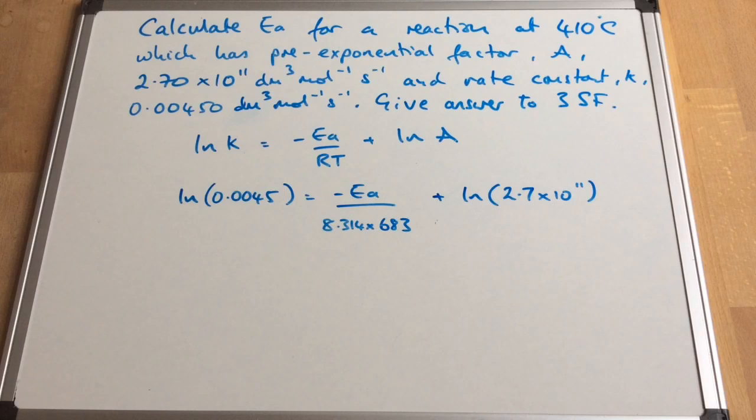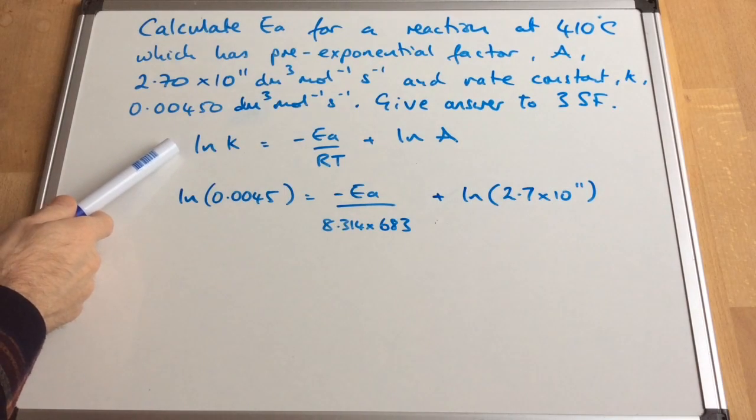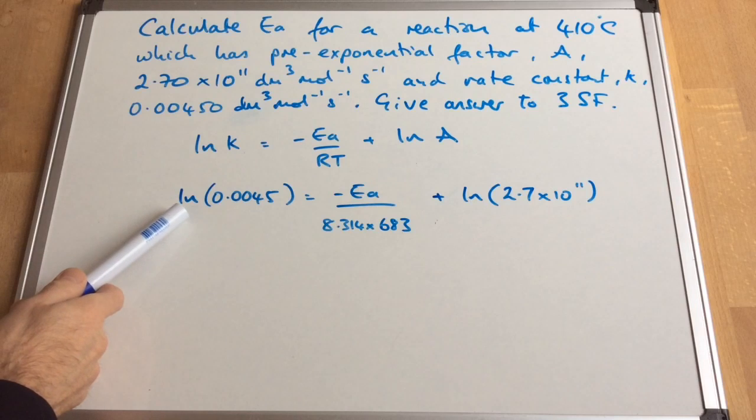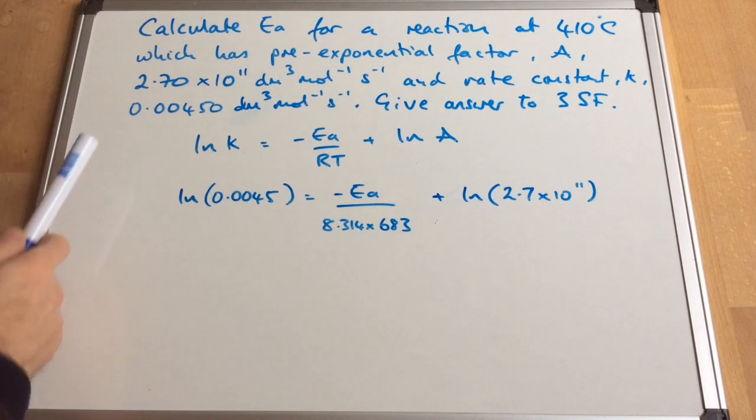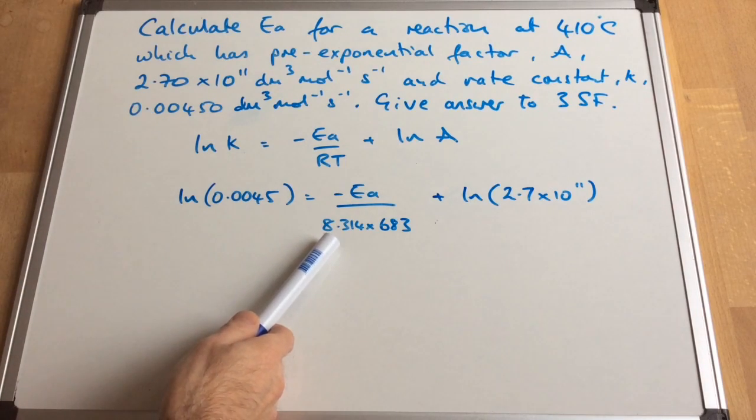So we're using the natural log form of the equation. You can see I've written that there. Remember that's on the datasheet. So I've subbed in the numbers that were given in the question. And just a reminder that the gas constant, 8.314, is on the datasheet.